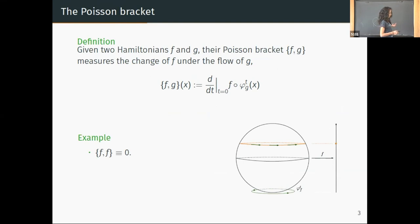Looking at the example from the previous slides, the function we've drawn here is the standard height function on the round sphere. The flow it generates is basically a rotation around the z-axis, so this rotation doesn't change the height of the point, and the height is preserved under the motion.